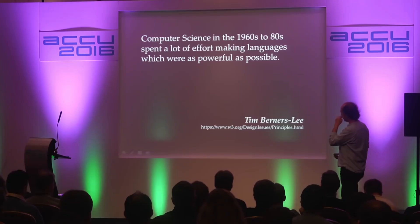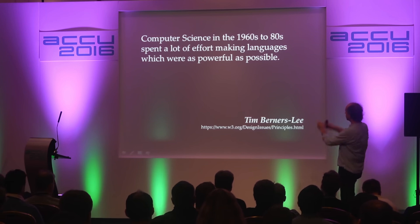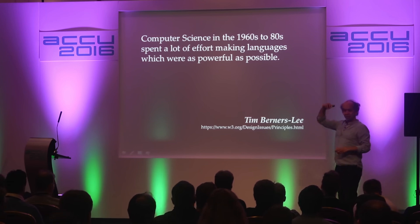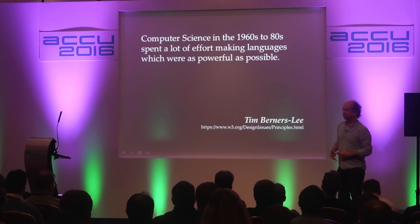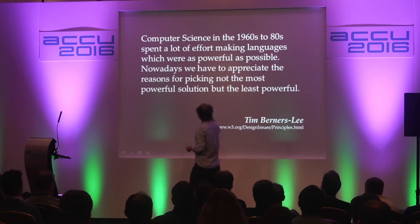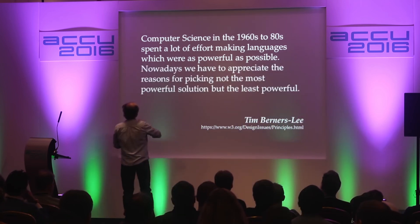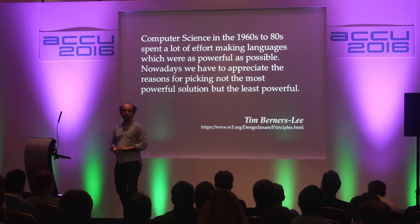Computer science in the 1960s to 80s spent a lot of effort making languages which were as powerful as possible. Had he written that in the early 2000s, he would have changed 80s to 90s — you get the idea. Nowadays, we have to appreciate the reasons for picking not the most powerful solution, but the least powerful.